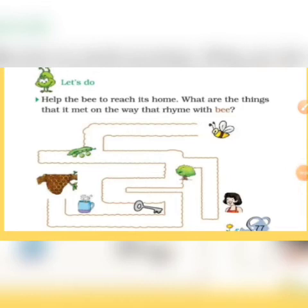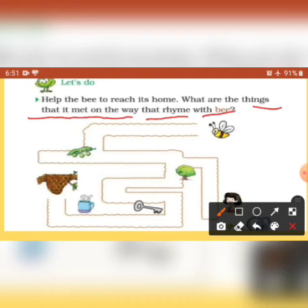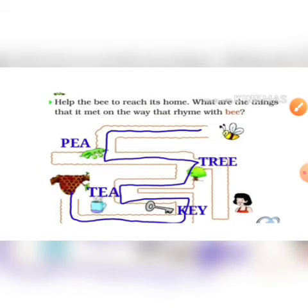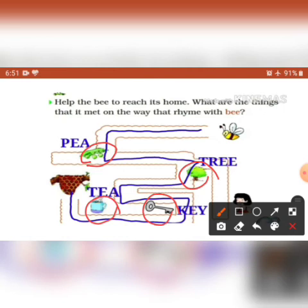Let's do: Help the bee to reach its home. What are the things it passed on the way that rhyme with 'bee'? Name the things that came along the way: bee, tree, key, tea. These words rhyme with the word 'bee'.